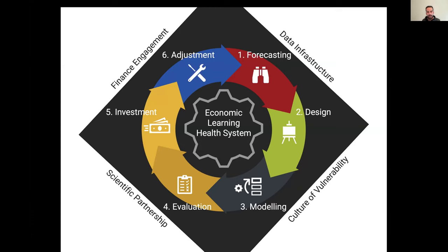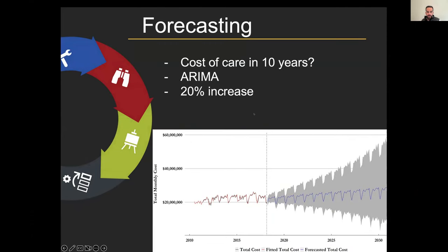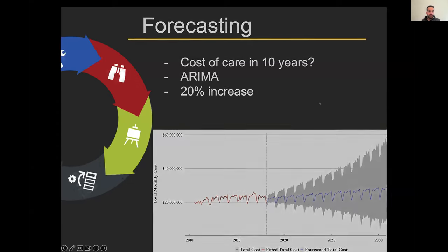The supports: you can't do this without data, can't do this without finance engagement, it's helpful to have scientific partnership, and it's also nice to have a culture of vulnerability, just because there are a lot of ideas and interventions that may not end up getting implemented if simulations aren't as promising. For the forecasting step, we did ARIMA — basically forecasting the costs of each patient who received home health services and was over the age of 65 within the health authority. The black line represents actual costs, the red line is the ARIMA model, and the blue line is the forecasted cost with gray to reflect the uncertainty. The take-home message here is about a 20% increase.